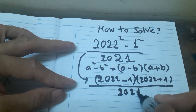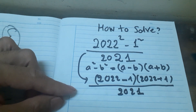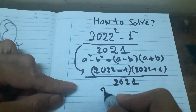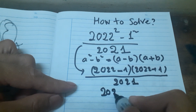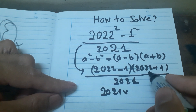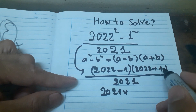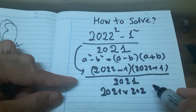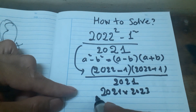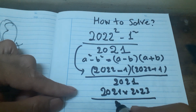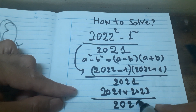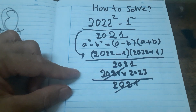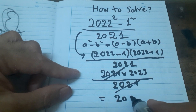Twenty one. Twenty two plus one equals two thousand. Twenty one. Twenty two plus one. Twenty three. Divide two thousand. Twenty one. Twenty two plus one equals two thousand. Twenty three.